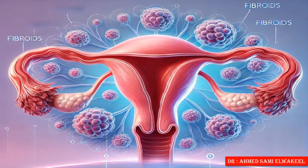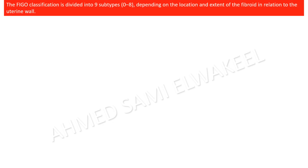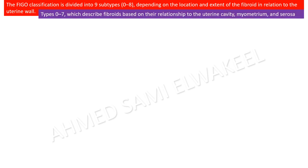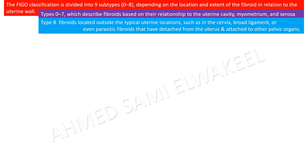Welcome to obstetrics and gynecology made easy. Today we are going to talk about the FIGO classification of fibroids and how to memorize it, and we will make a mnemonic for fibroid degeneration. The FIGO classification is divided into nine subtypes from zero to eight, depending on the location and the extent of the fibroid in relation to the uterine wall. Types zero to seven describe fibroids based on their relationship to the uterine cavity, myometrium, and serosa.